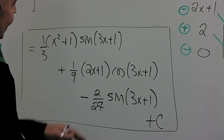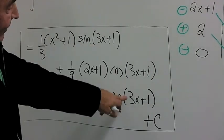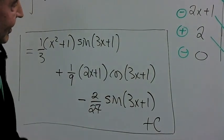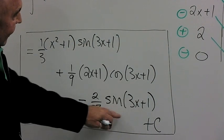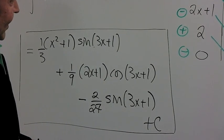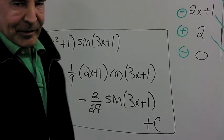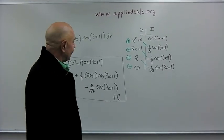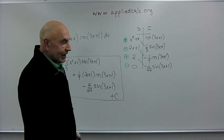We could simplify it a little bit because there are two terms that have sine of 3x plus 1. So if you're very fastidious about your algebra, you could group these together and take out the sine of 3x plus 1 as a common factor. But in this particular problem, I don't think it's worth the trouble unless you want to go further. Now, wasn't that nice and easy?